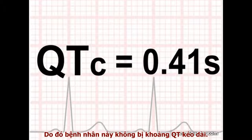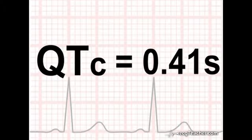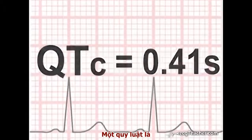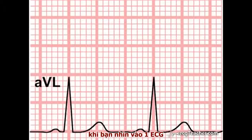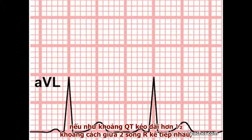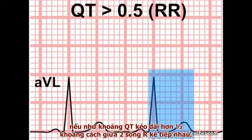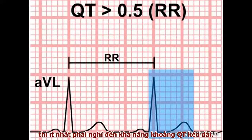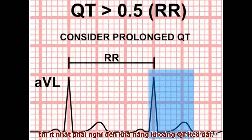This patient does not have prolonged QT. To give you a simple rule of thumb: when you look at an ECG, if the observed QT interval is more than half the RR interval, at least consider the possibility of prolonged QT.